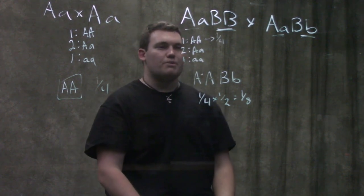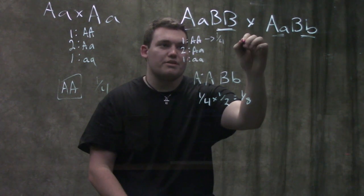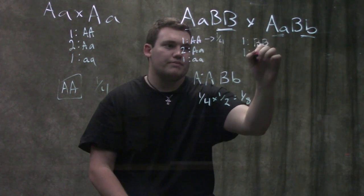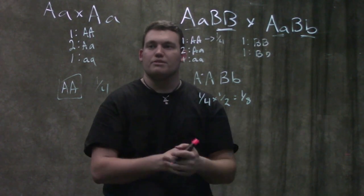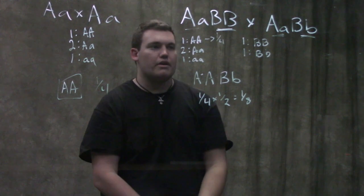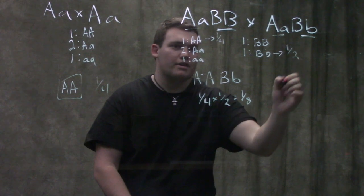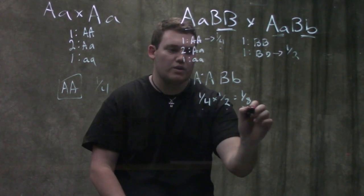Now I'm going to do big B little b. And when I do this, if I were to do a Punnett square, what I would end up with is a one to one ratio of big B big B, big B little b. And if you guys do a Punnett square, I promise you will see the 50-50 ratio there. So if that is that, then the chance we get this is one half. And that's where I got my one quarter and one half from. One quarter times one half is one eighth.